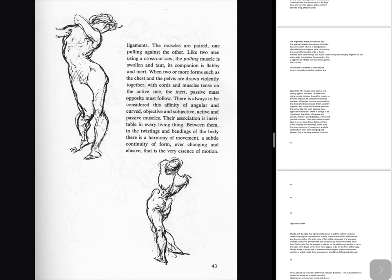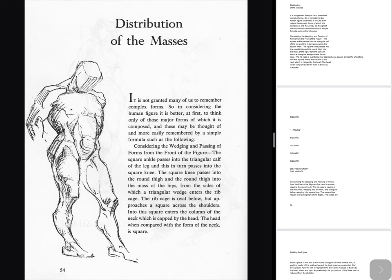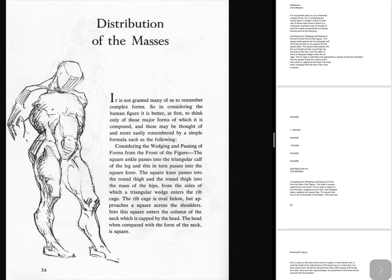Distribution of the masses: It is not granted many of us to remember complex forms. So in considering the human figure it is better, at first, to think only of those major forms of which it is composed, and these may be thought of and more easily remembered by a simple formula. Considering the wedging and passing of forms from the front of the figure: the square ankle passes into the triangular calf of the leg and this in turn passes into the square knee. The square knee passes into the round thigh and the round thigh into the mass of the hips, from the sides of which a triangular wedge enters the rib cage. The rib cage is oval below but approaches a square across the shoulders. Into this square enters the column of the neck, which is capped by the head. The head, when compared with the form of the neck, is square.